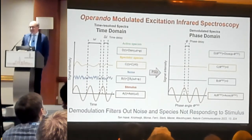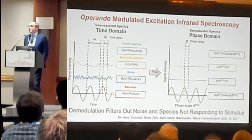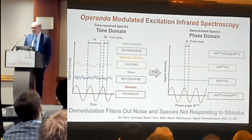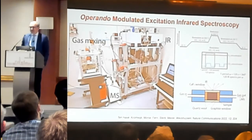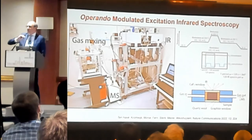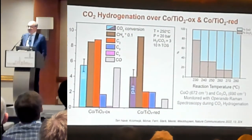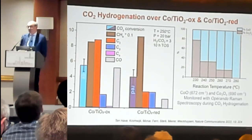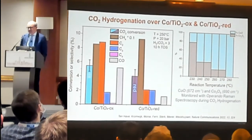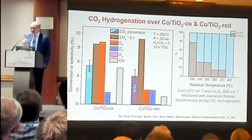I introduce the second transient technique: operando modulated excitation infrared spectroscopy. You can measure in the time domain and translate that to the phase domain. The result is that you filter out noise and can also see species folding into a pulse. The pulse we use maintains constant hydrogen while adding CO2 on and off. We have studied two systems: cobalt-titania in its mainly oxidized state and a reduced cobalt-titania, probed with operando Raman to follow whether oxide is still present while the reaction is running.